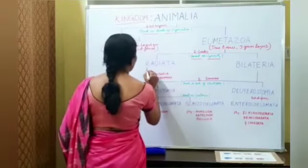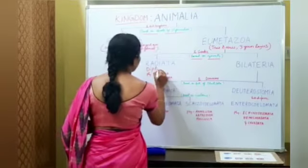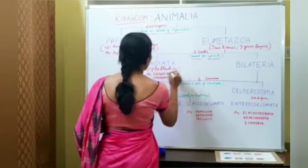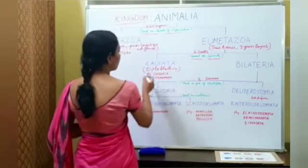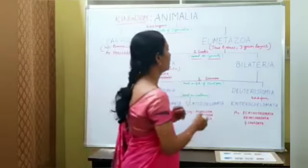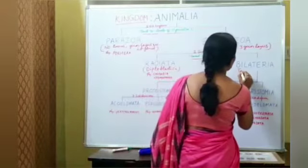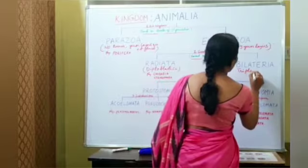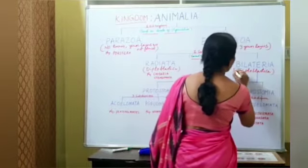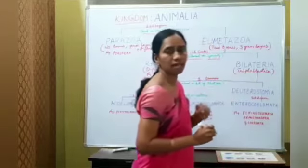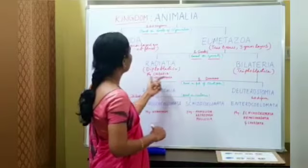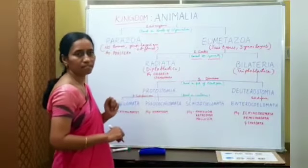Radiata is otherwise called Diploblastica, meaning two germ layers are present. Bilateria is otherwise called Triploblastica, meaning three germ layers are present. Phylum Cnidaria and Ctenophora are the examples for Radiata.